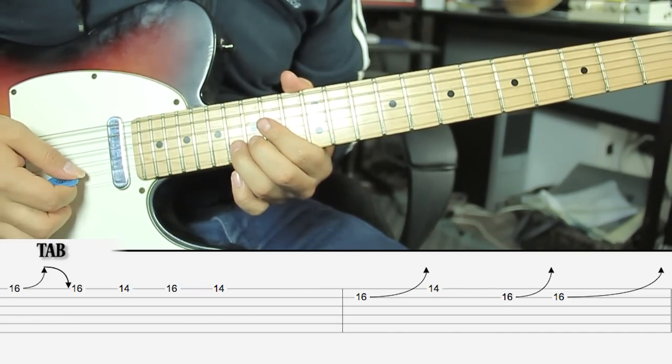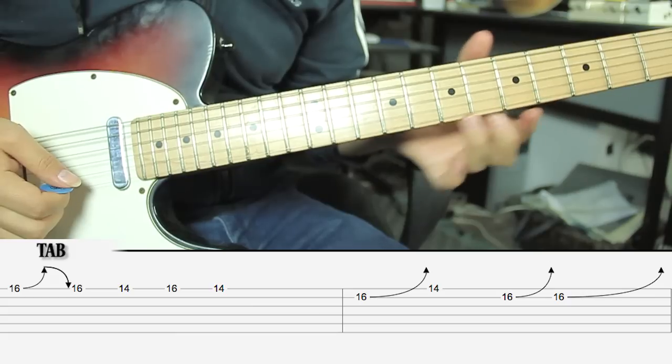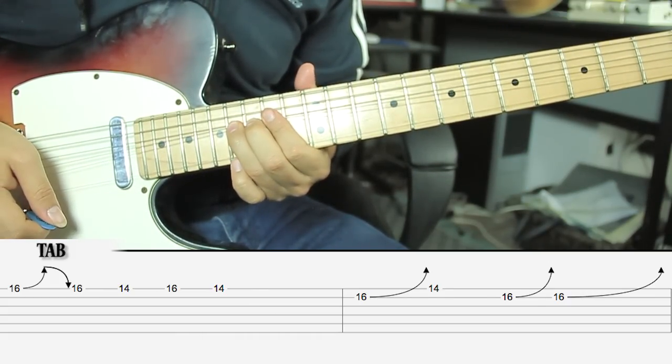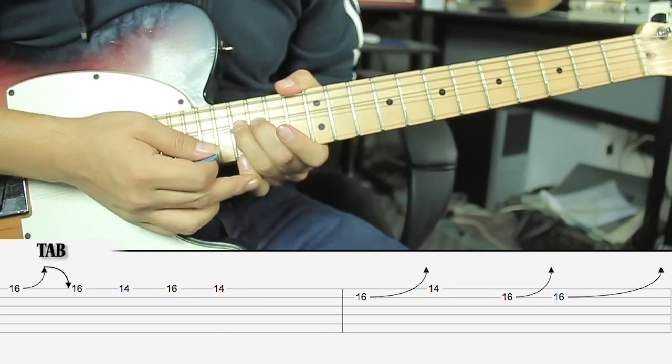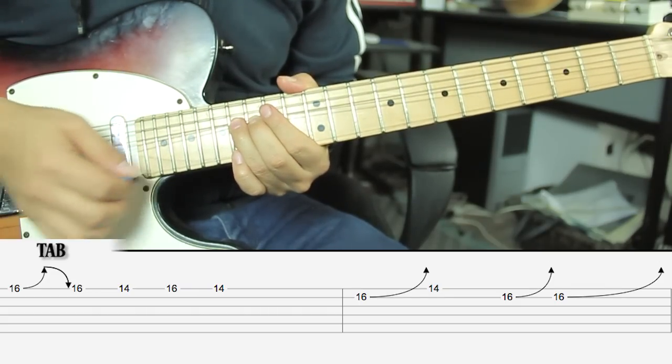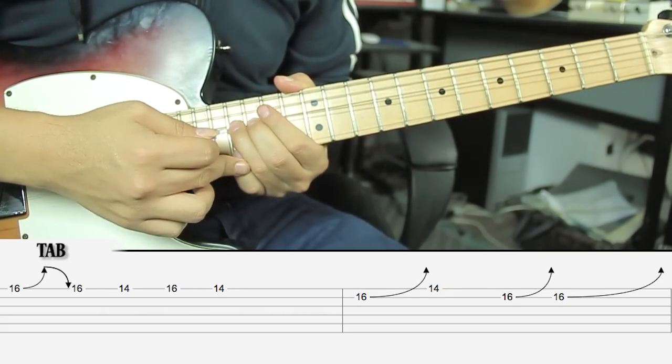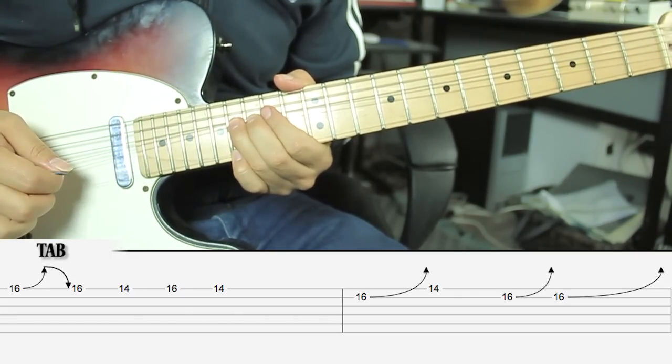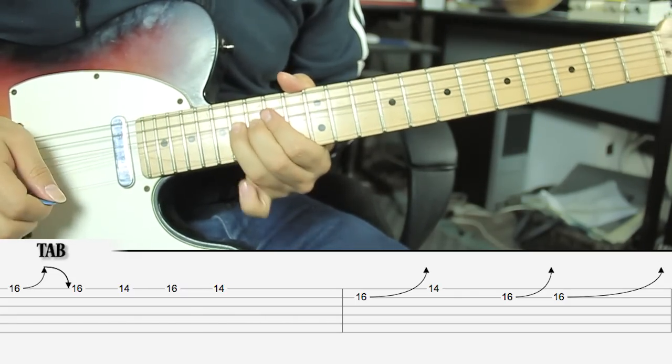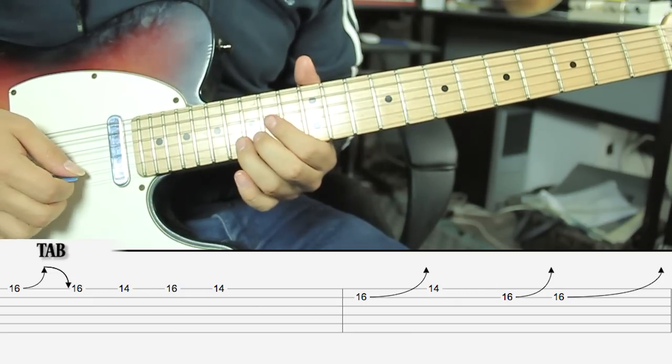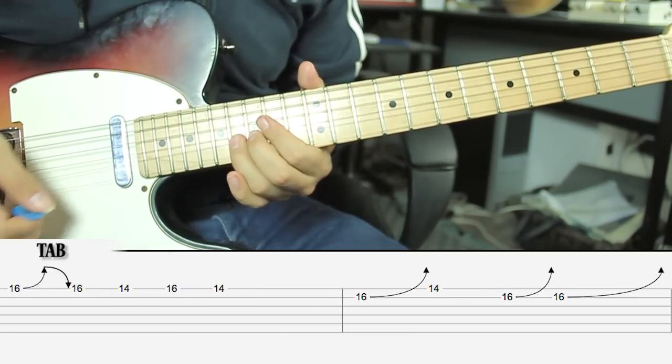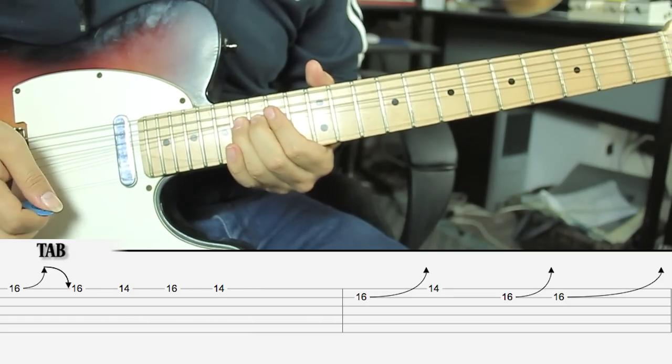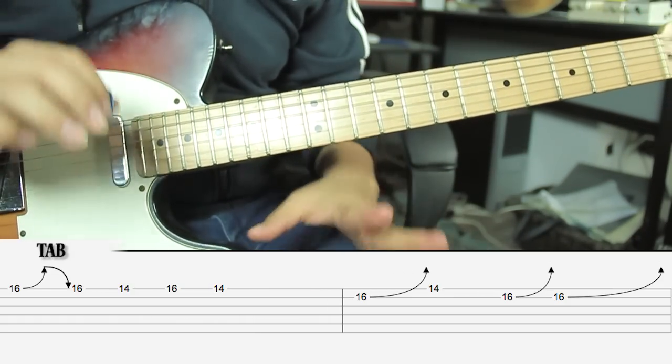Then we do a one-tone bend from D#. And with the - this is going to be with the third finger, and then with the pinky we play G# G#, fourth fret of the first string. And then to finish that phrase, we do two like two bends of one tone, same. So I'll play that phrase very slowly.